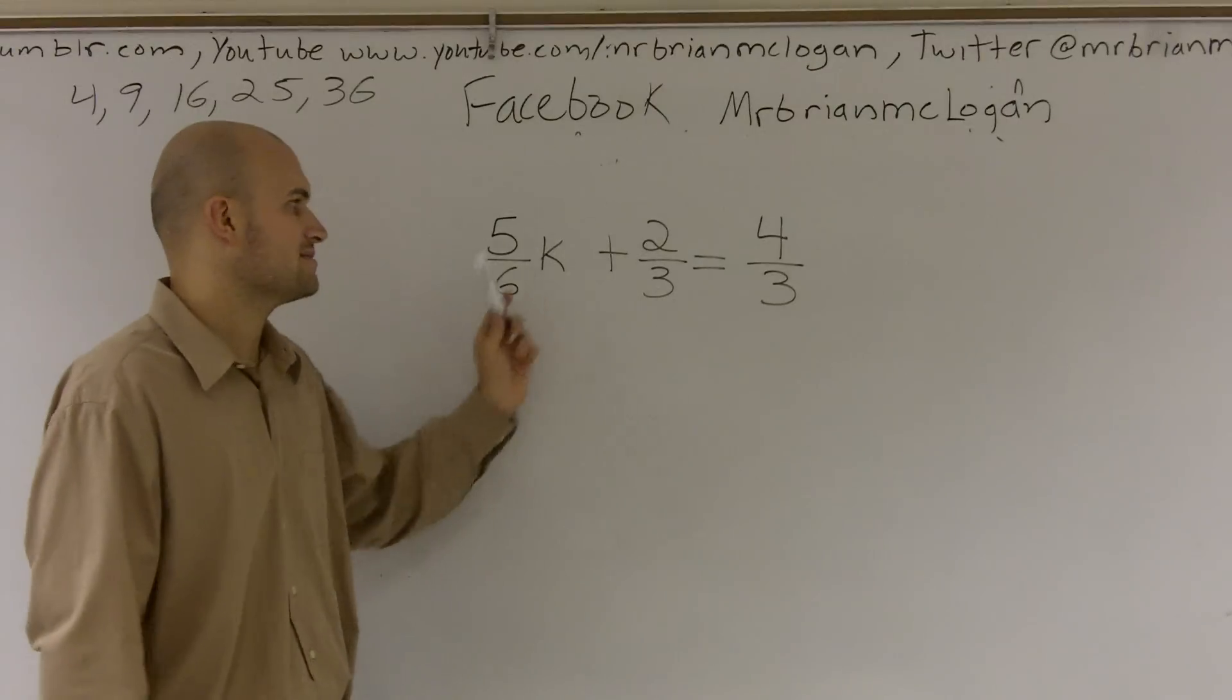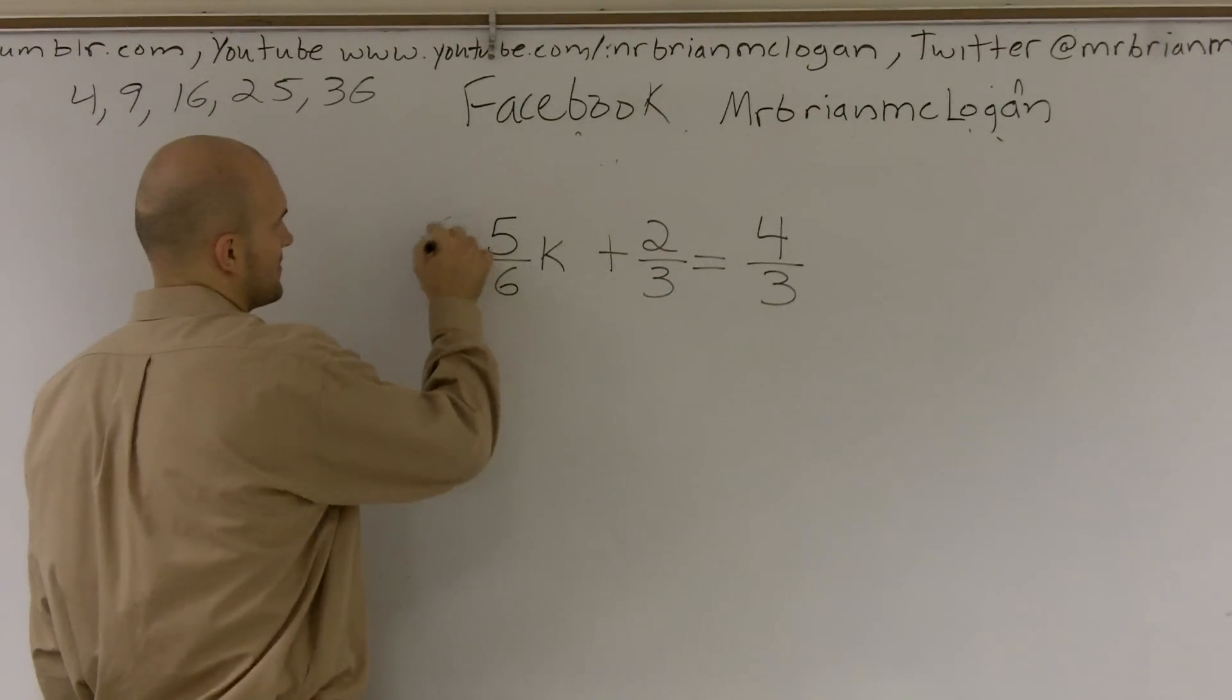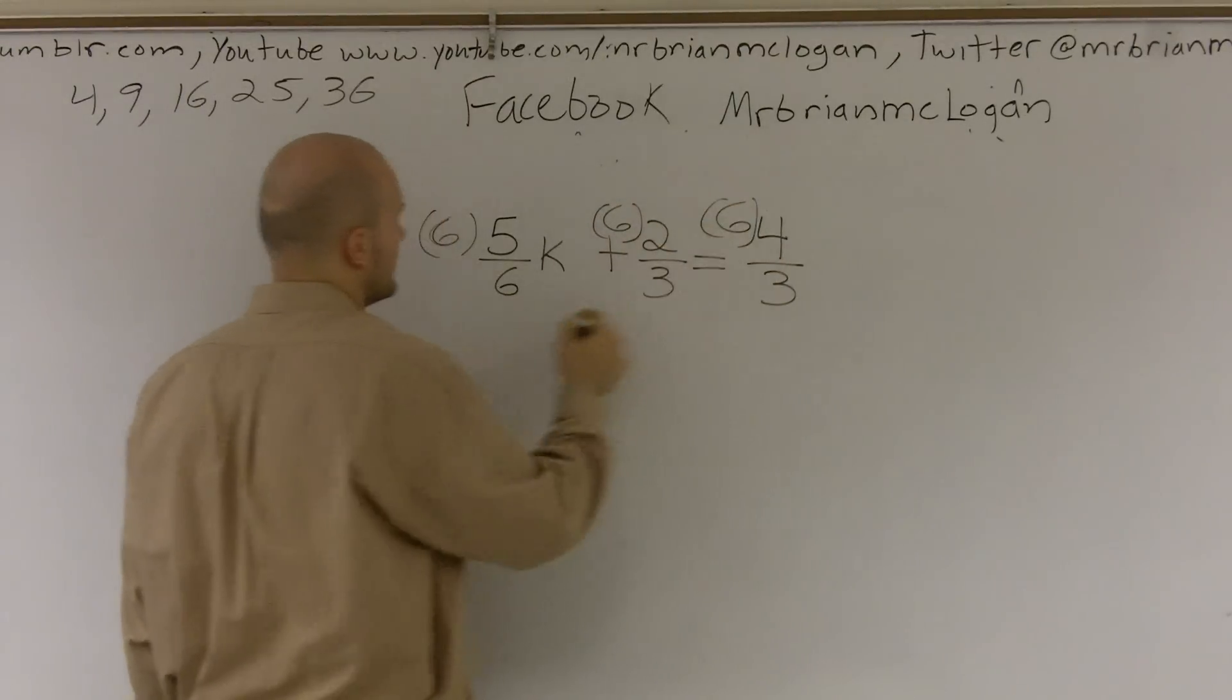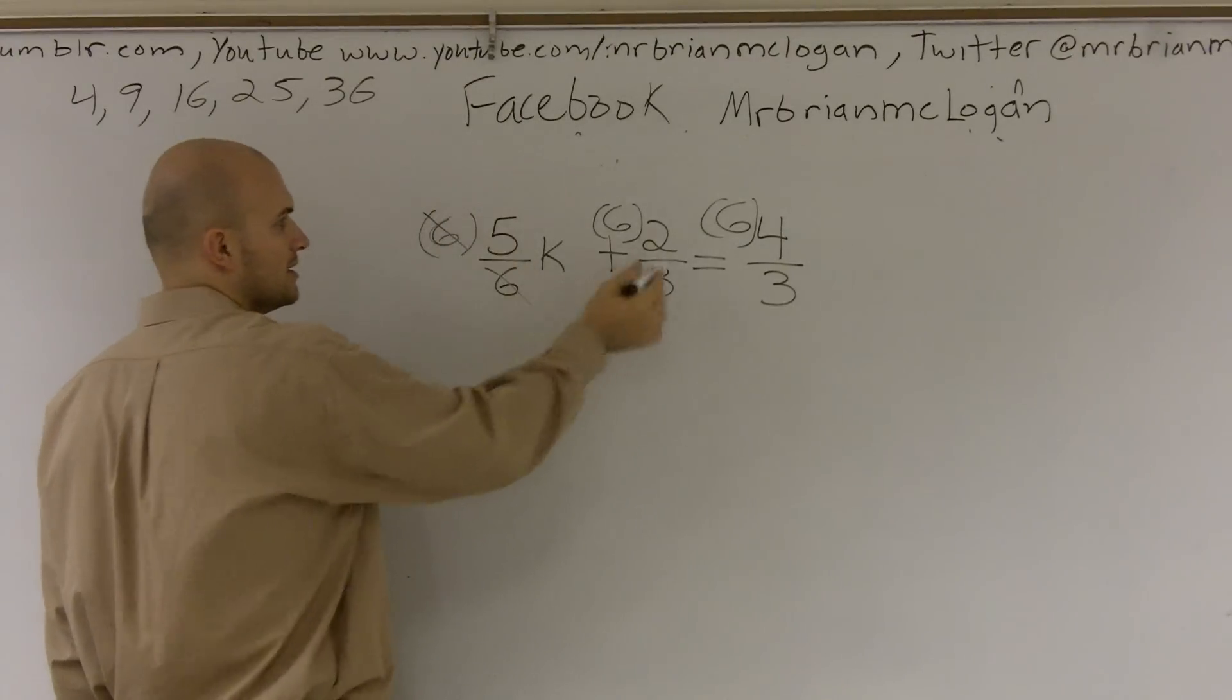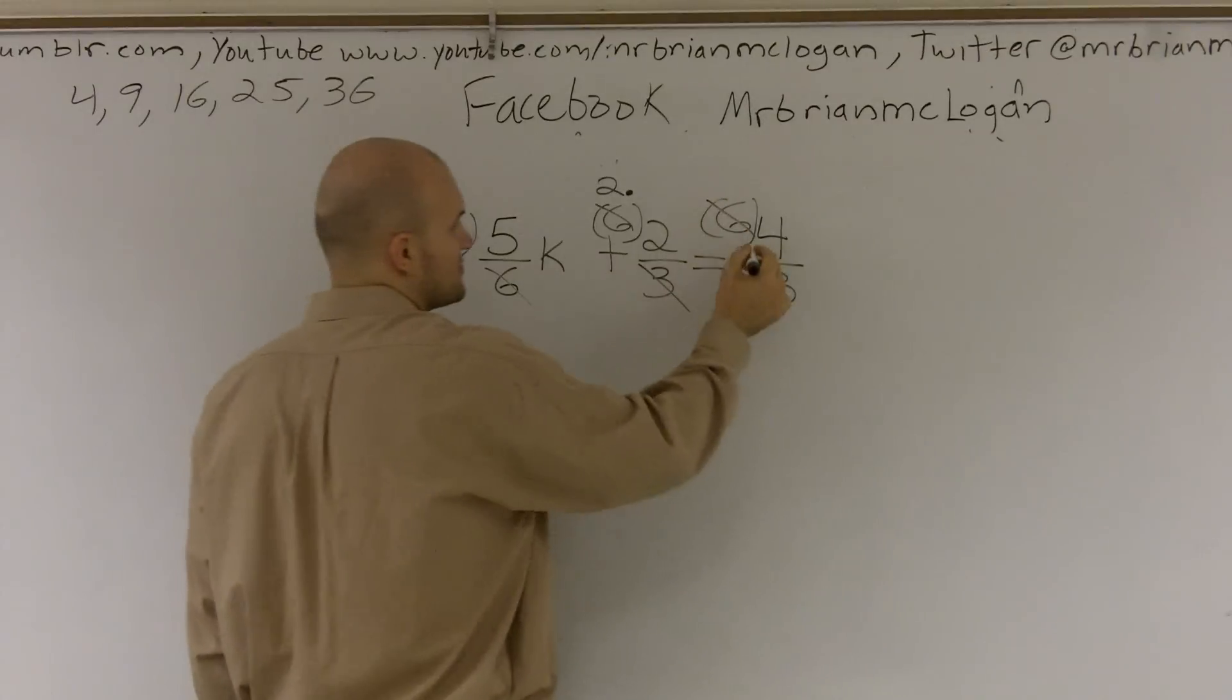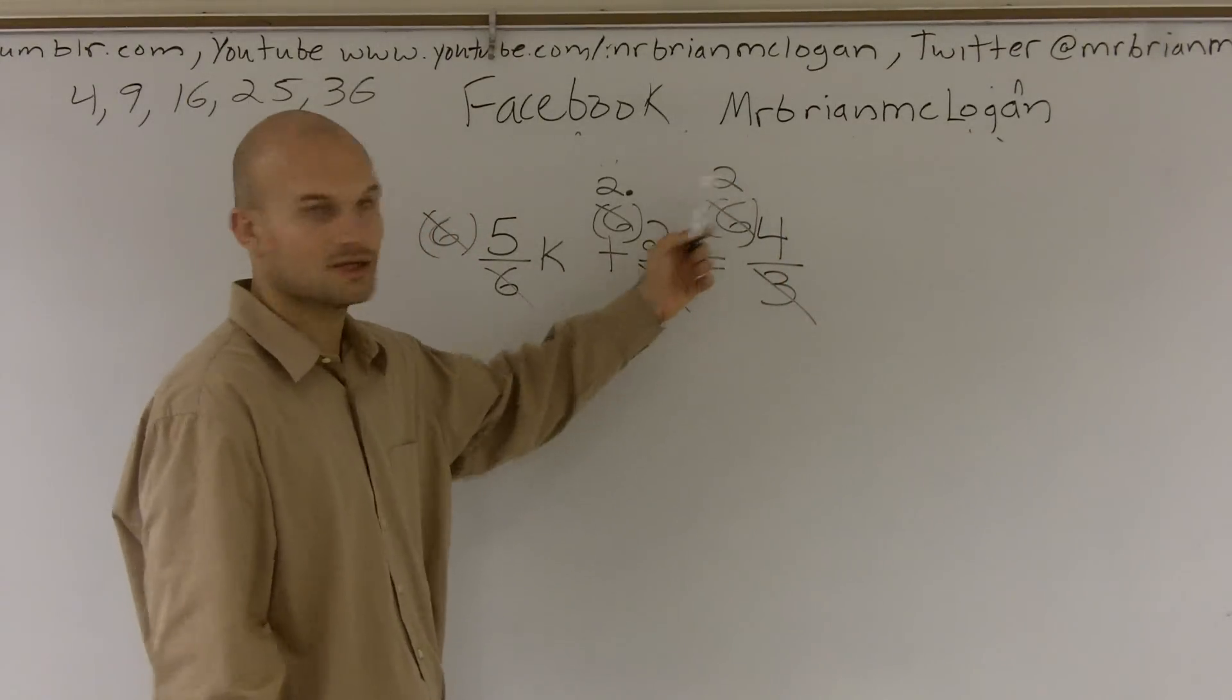If you multiply by a 6 times every single one of these, usually if I multiply a 6 times here, a 6 times here, and a 6 times here, well, these 6's would cancel out and I'd be left with a 1. These would cancel out and I'd be left with a 2 up top, and then these would cancel out and I'd be left with a 2. Because 6 divided by 3 is still left with 2.